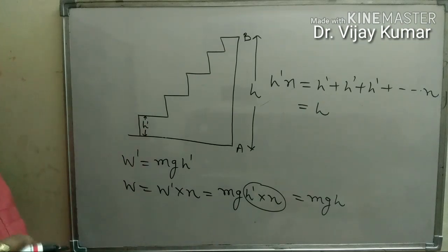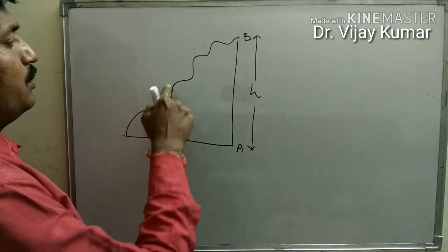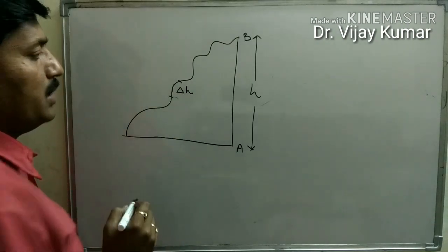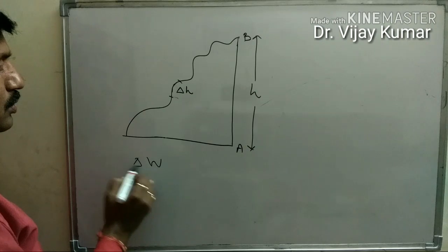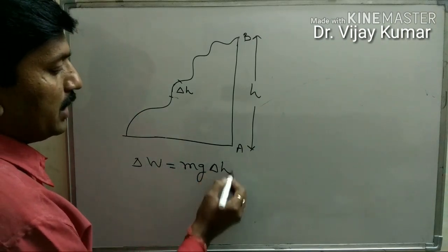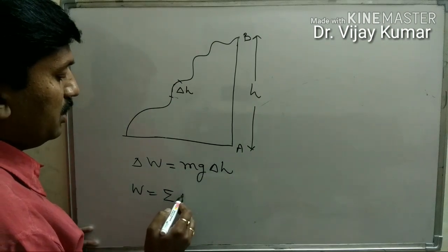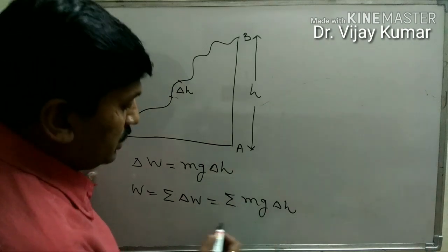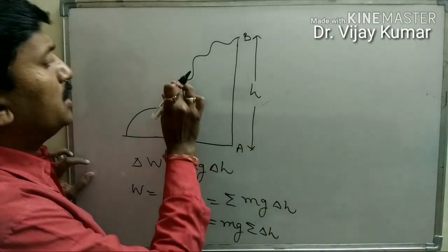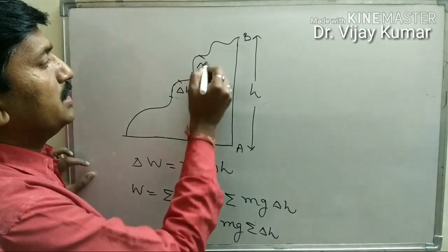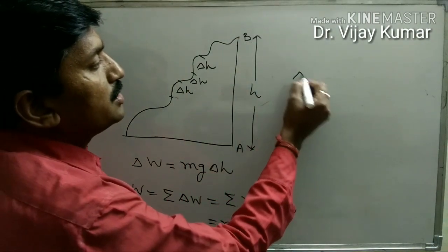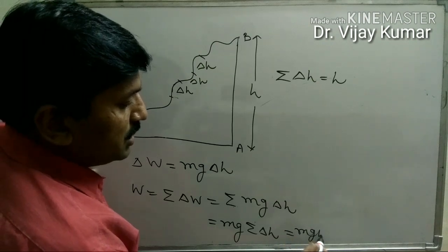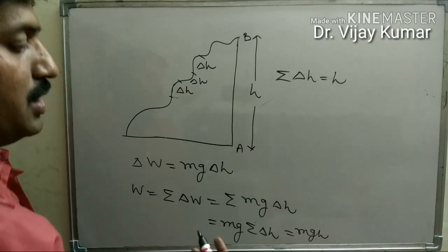If the body follows this curved path, then work done is again MgH, as already calculated in situation 1. To calculate the work done, we consider that each small displacement is delta H and the work done for this displacement is delta W equal to mg delta H. Total work done is sigma delta W, which equals mg sigma delta H. The sum of all these delta H values equals the total height H, so total work done is MgH.